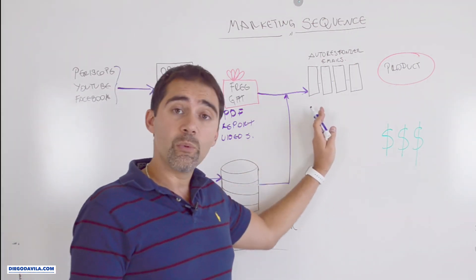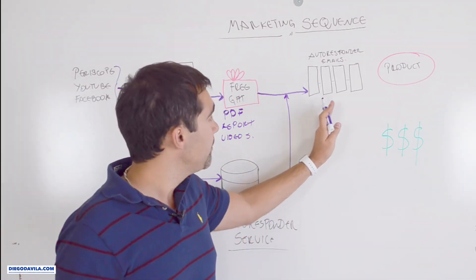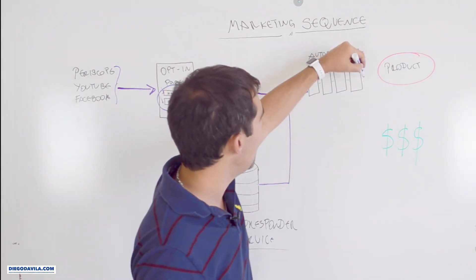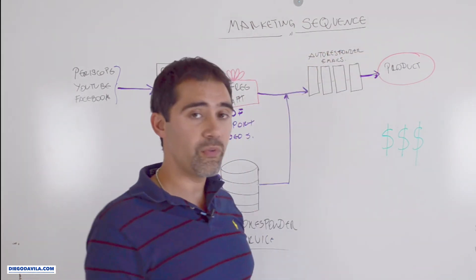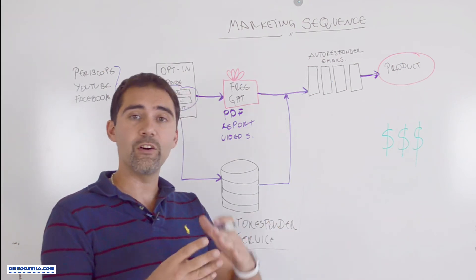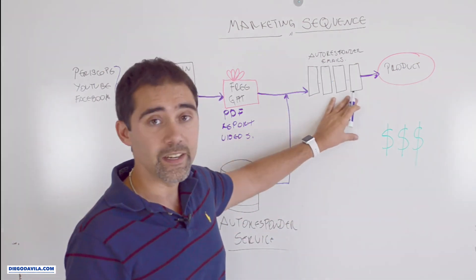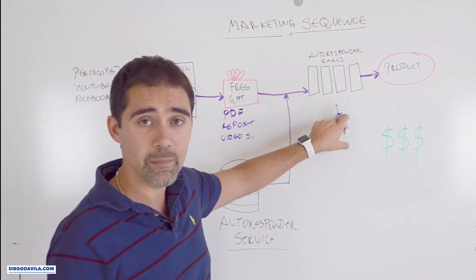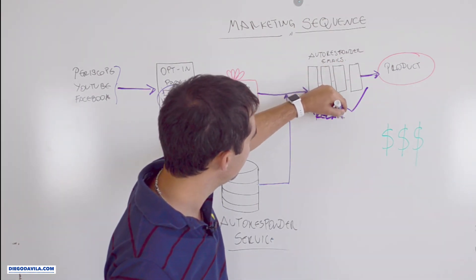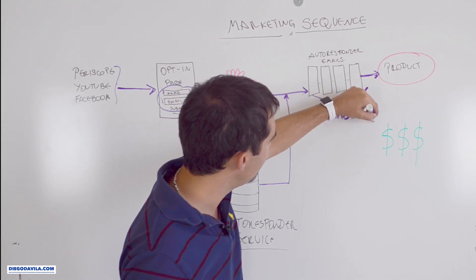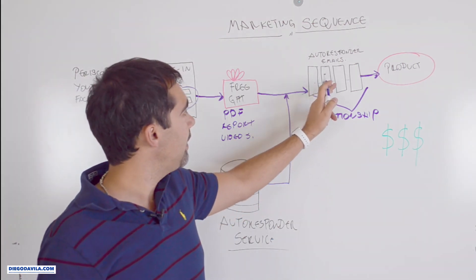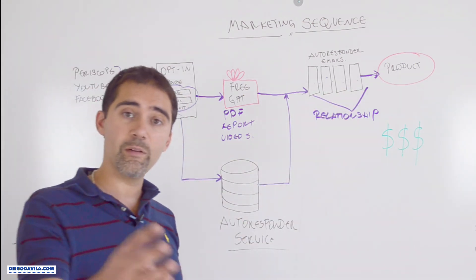After the free gift, they will enter an autoresponder email series — these are automatic emails that the system sends. You write the emails and the system will send a sequence automatically every time a new customer enters their name and email on your opt-in page. They receive email day one, email day two, day three. When you end the autoresponder series, you offer them a product. They receive an offer saying: 'Here is a product I built specially for you — with this product you can accomplish this and that.' The autoresponder emails are very important because you are building a relationship with your customer, your viewer, your followers by giving them value on every single email.